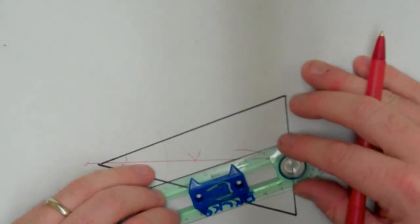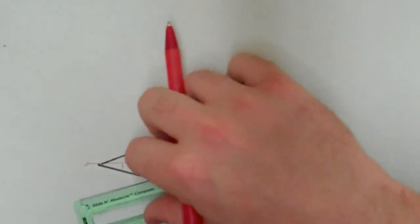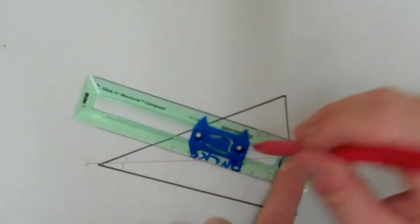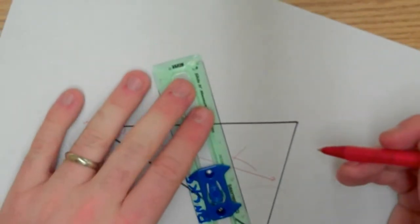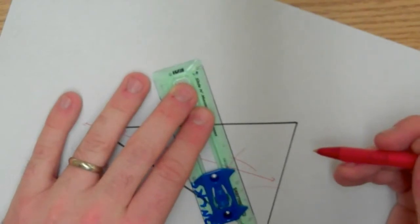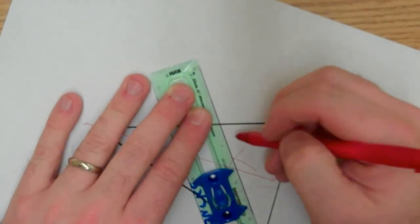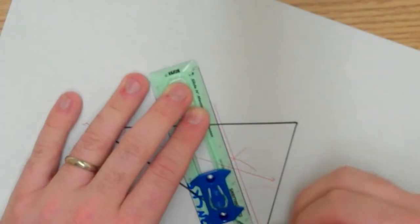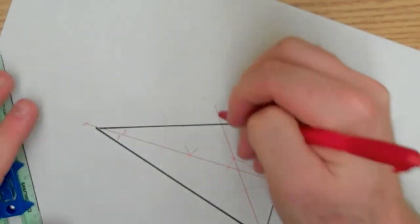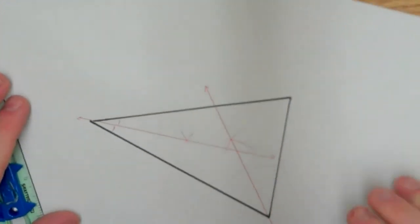Turn it around, and make the same exact arc on this side. And there's my point of intersection. So connect that with the vertex of the angle. And there you go.